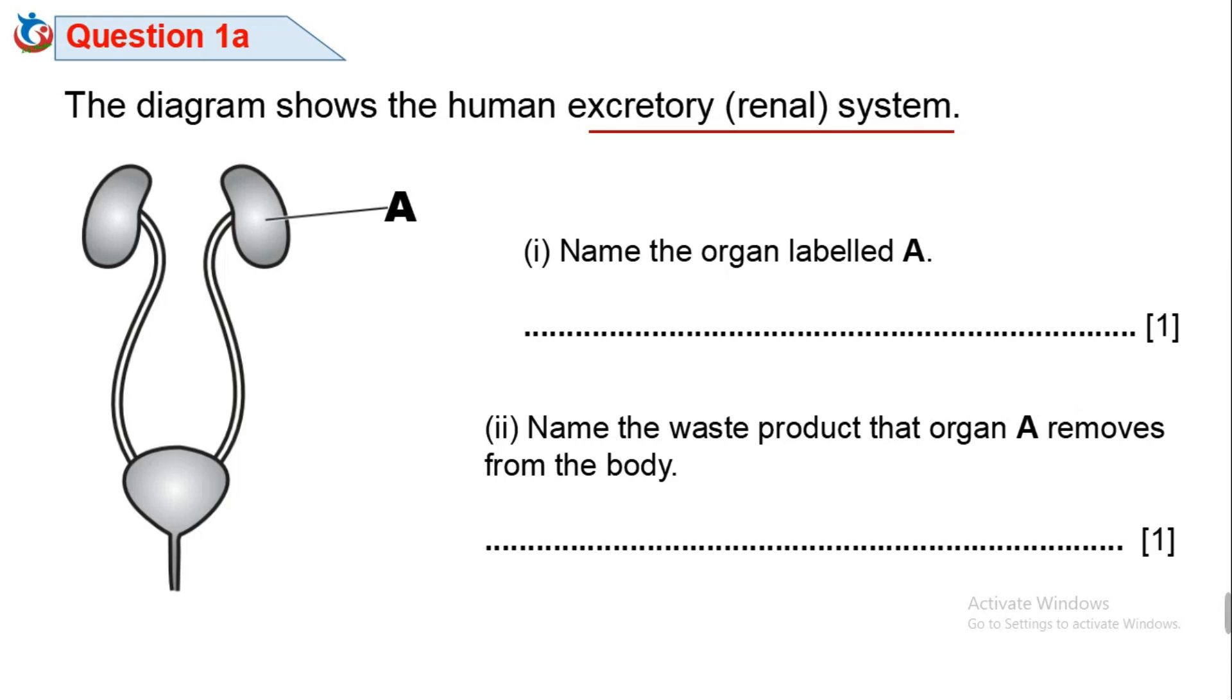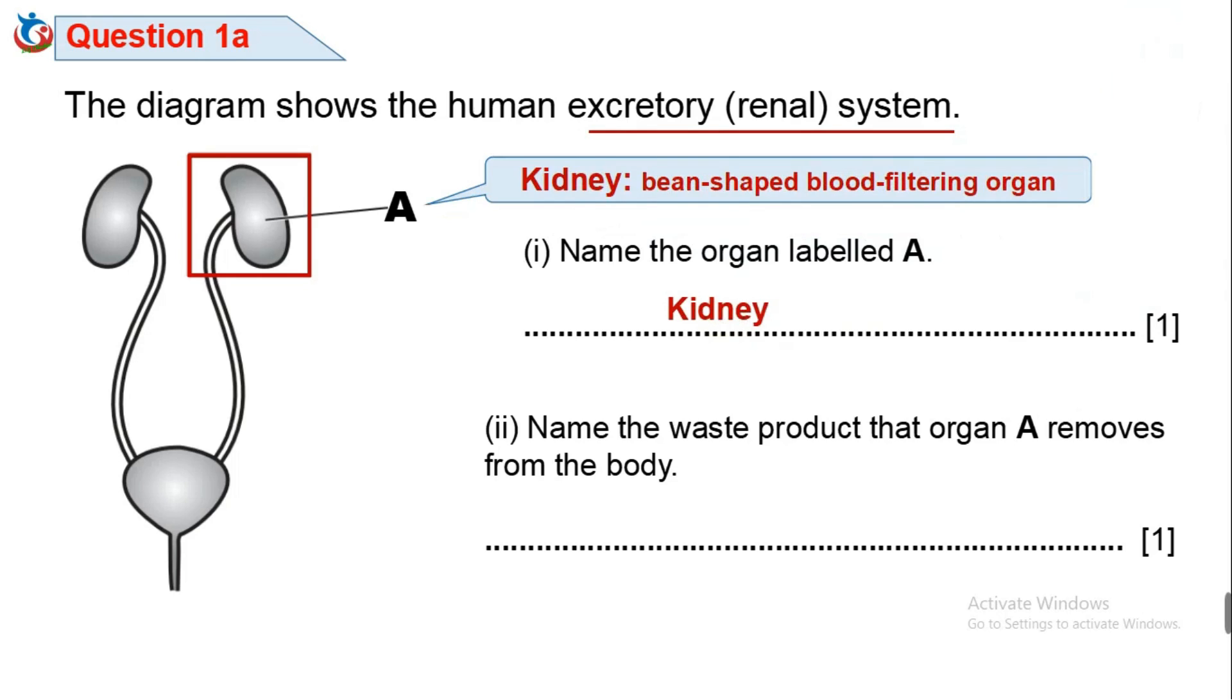These organs are responsible for the removal of waste products from the body. Take a closer look at the part labeled A. It is a bean shaped organ like a bean seed. The only organ that exhibits this shape is the kidney. Hence, the part labeled A is kidney and usually in pairs.